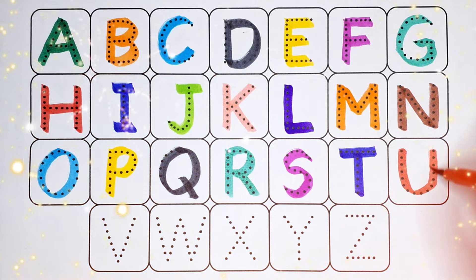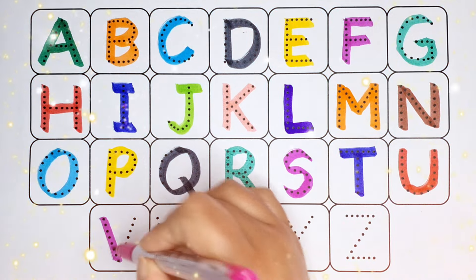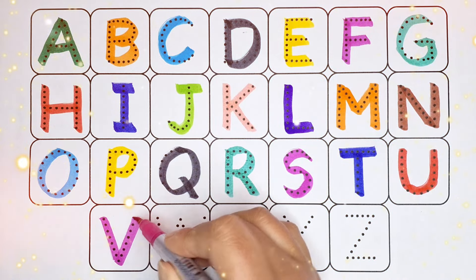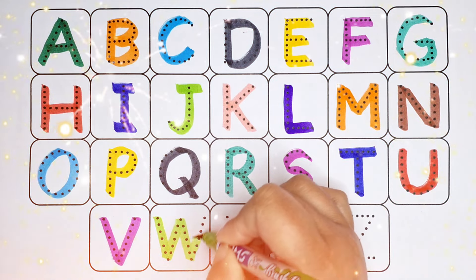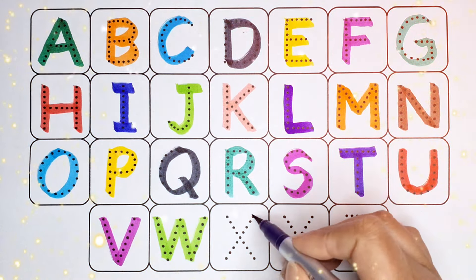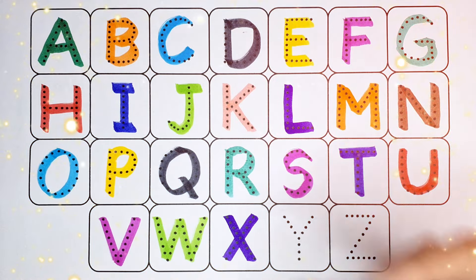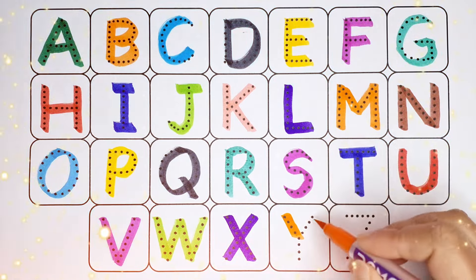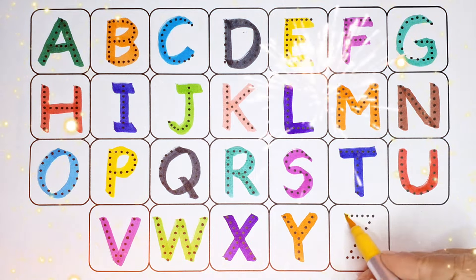Red color U, U for universe. Pink color V, V for vulture. Green color W, W for watch. Purple color X, X for x-ray. Orange color Y, Y for yoyo. Yellow color Z, Z for zero.